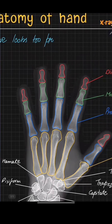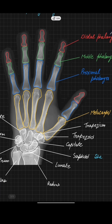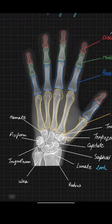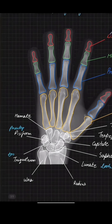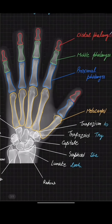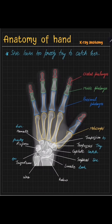Now I am writing a mnemonic so that you can learn the carpal bones, because these are a bit harder to learn. The mnemonic is: 'She Looks Too Pretty, Try To Catch Her.' I'm also writing how you can use this mnemonic to learn the names of the bones.